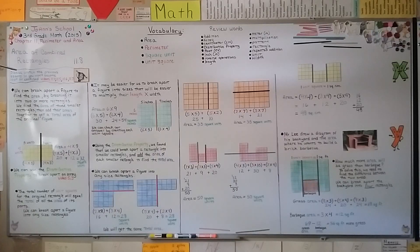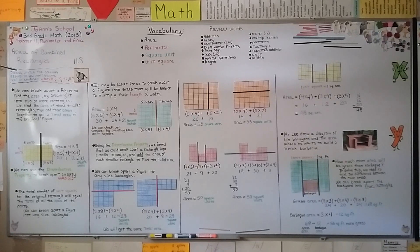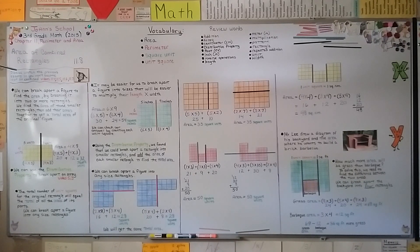Remember: when finding the area of combined rectangles, we can break the figure apart into any size rectangles as long as we're making full rectangles, then add their total areas to get the total area of the entire figure. In the next lesson, 11.9, we'll go back to talking about perimeter. Hope to see you there, and have a really good day!